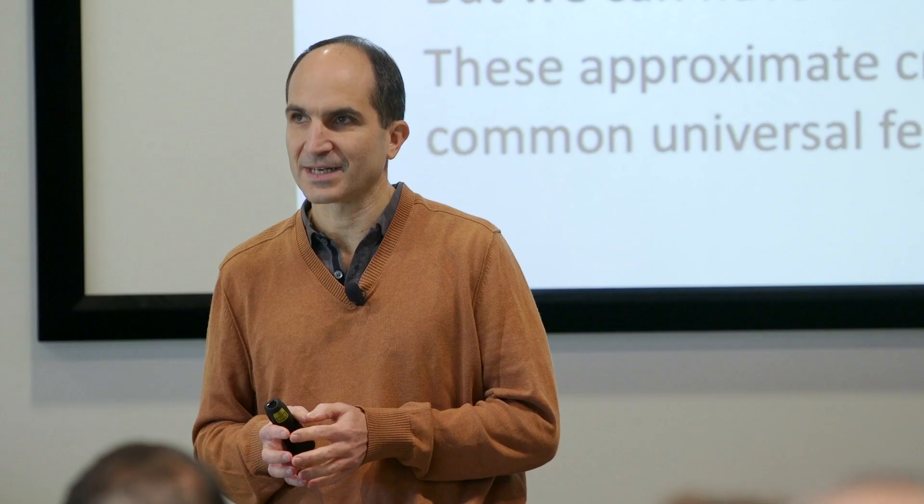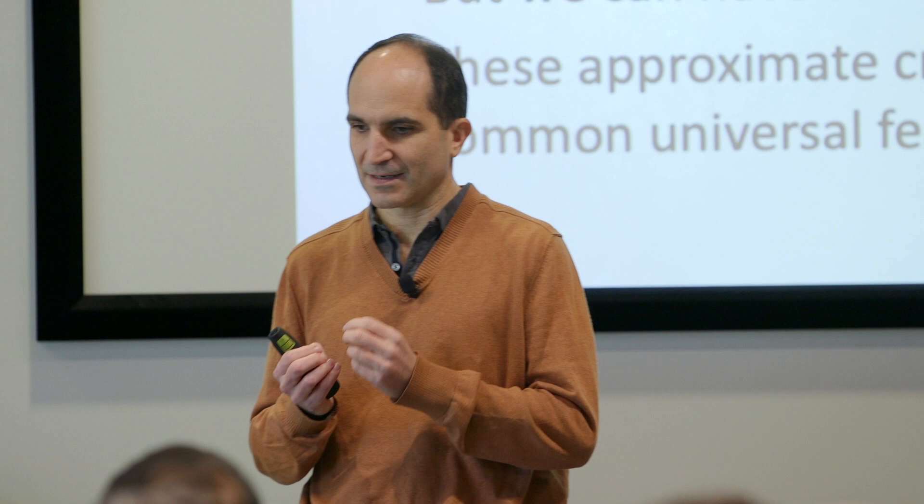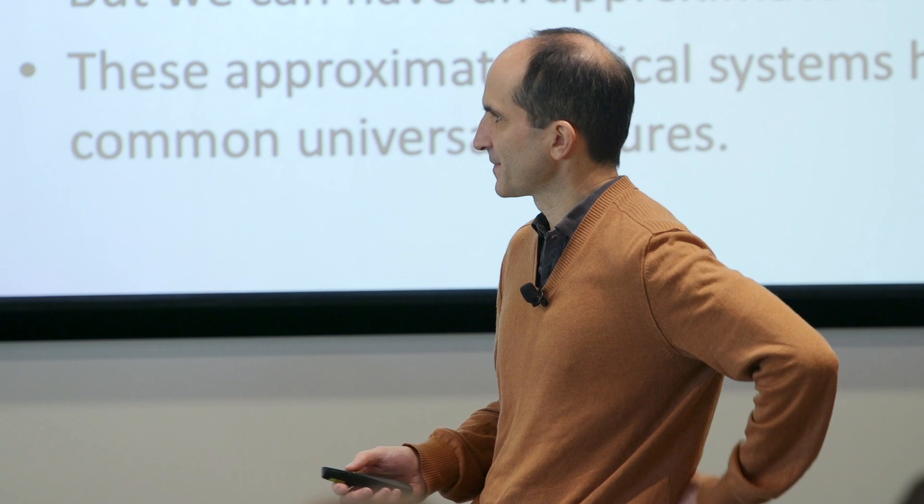The systems we're going to discuss have an approximate scaling symmetry that is useful for analyzing them—think of these as approximate critical systems. Critical systems, as people discuss in condensed matter physics, are when there is an emergence of very long length scales and very long time scales, with a scaling variance. Here we'll have a scaling variance in the time direction, so the system will look similar at short times and at longer times.